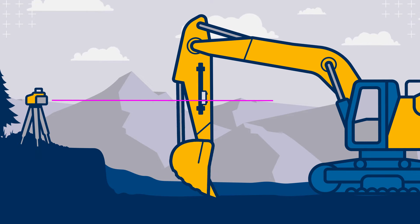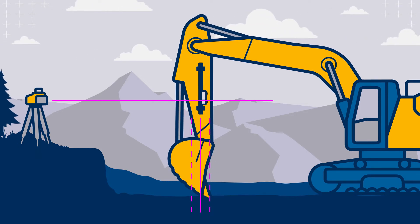When checking grade with the dipper arm of an excavator or backhoe, the dipper arm needs to be plumb or in the vertical position, similar to how a grade rod needs to be plumbed for accurate elevation readings.